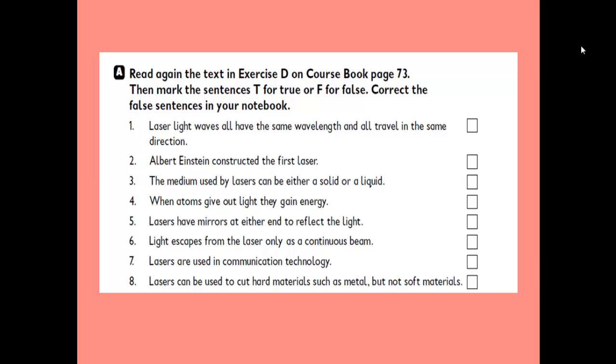Number 1: Laser light waves all have the same wavelength and all travel in the same direction. Number 2: Albert Einstein constructed the first laser. Number 3: The medium used by lasers can be either a solid or a liquid. Number 4: When atoms give out light they gain energy. Number 5: Lasers have mirrors at either end to reflect the light. Number 6: Light escapes from the laser only as a continuous beam. Number 7: Lasers are used in communication technology. Number 8: Lasers can be used to cut hard materials such as metal but not soft materials.